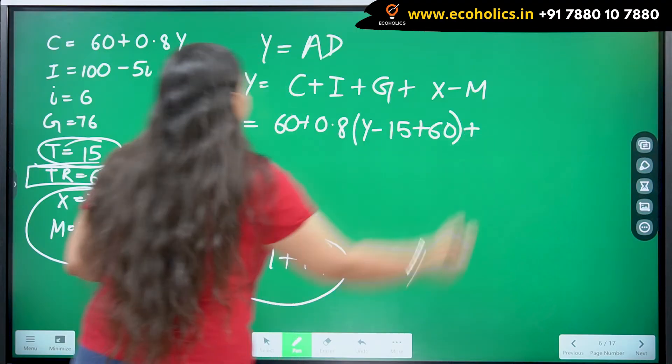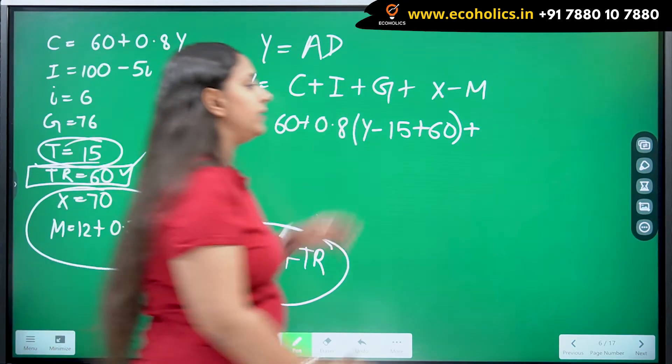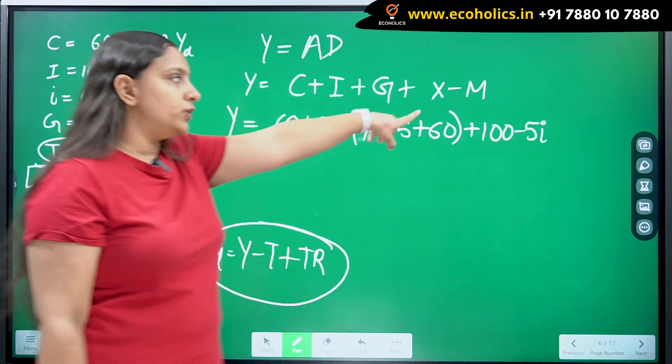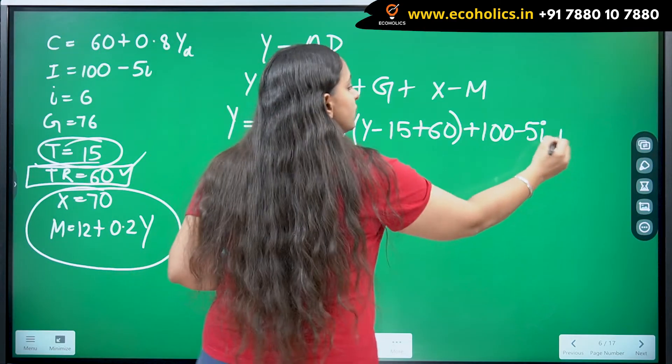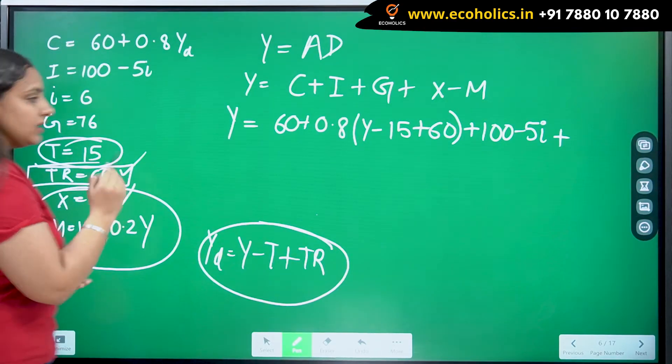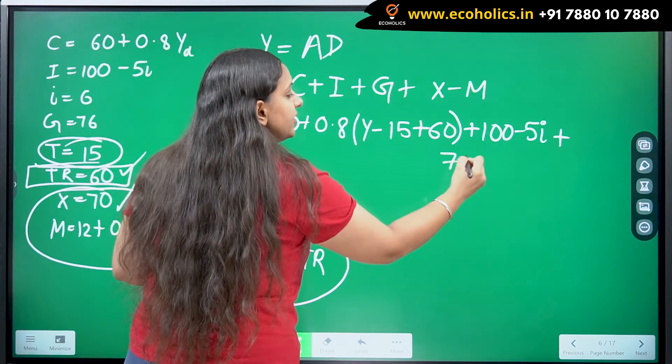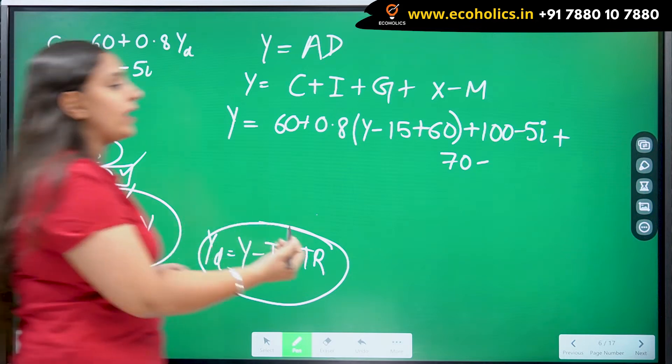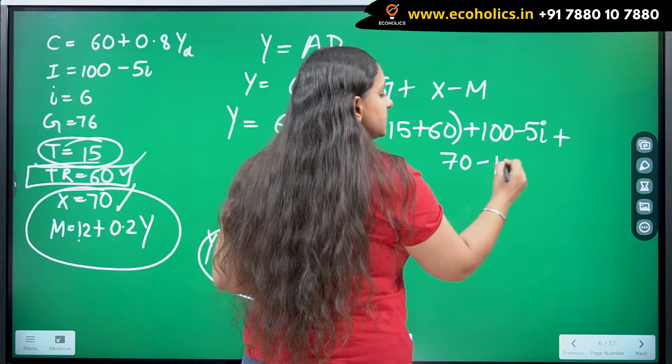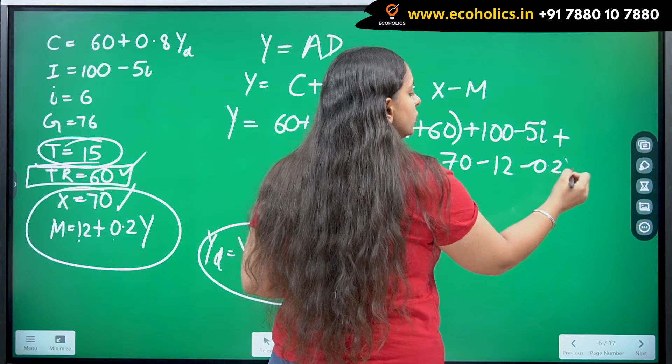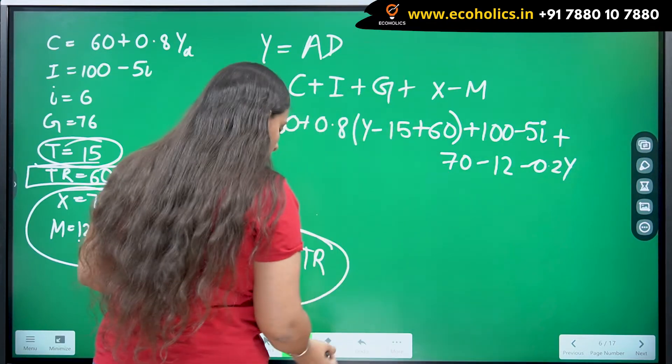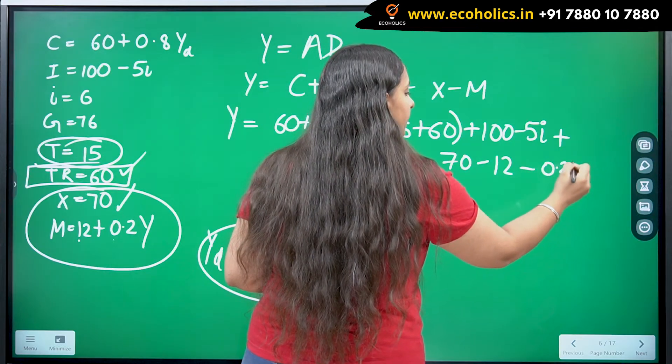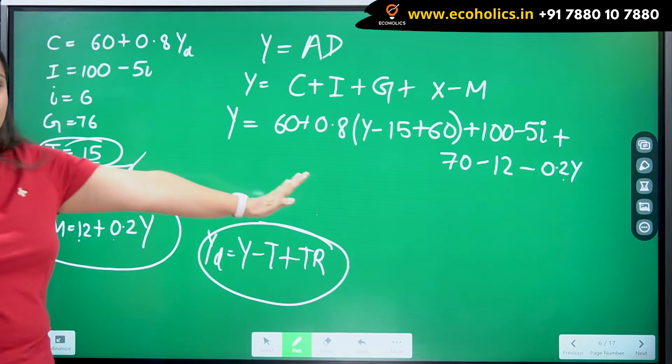I am going to put the values: 60 plus 0.8 for disposable income Y minus taxes which are equal to 15 plus transfer payments which are equal to 60 over here. 60 plus I. What is investment? 100 minus 5i. After that, I need to put the value of exports which are equal to 70 given to me. 70 minus imports which are equal to 12 plus 0.2Y. Plus 12 minus 0.2Y because we had a subtraction sign, so the things will get negative.